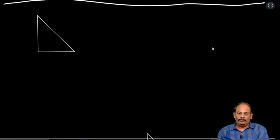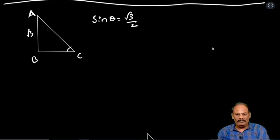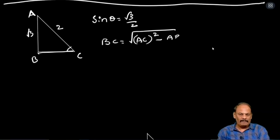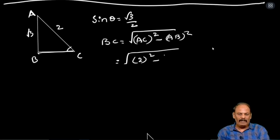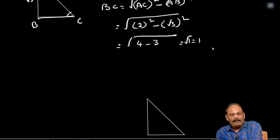One more sum: sin theta equal to root 3 by 2. We will put the titles here A, B, C. Sin theta equals opposite side by hypotenuse. We need to find BC. BC equal to root of AC square minus AB square, that is root of 2 whole square minus root 3 whole square, equal to root of 4 minus 3, root of 1, equal to 1.